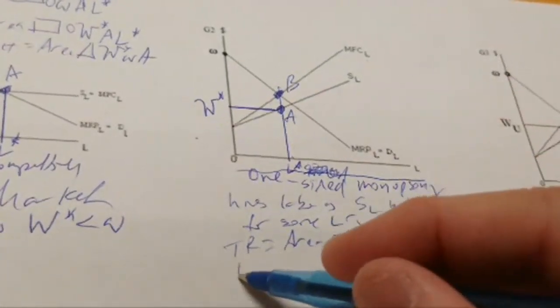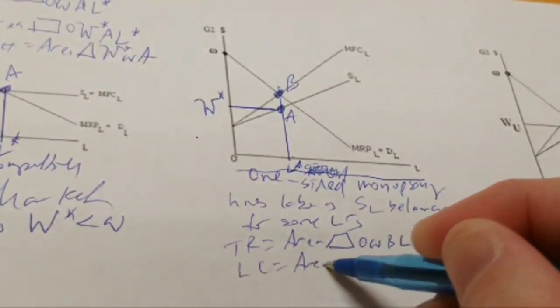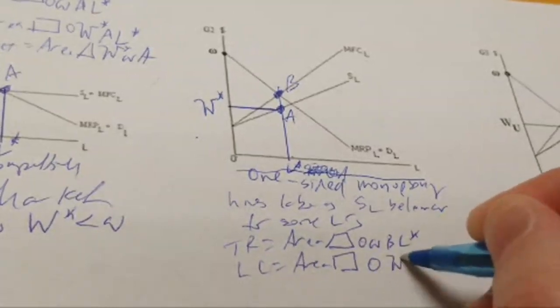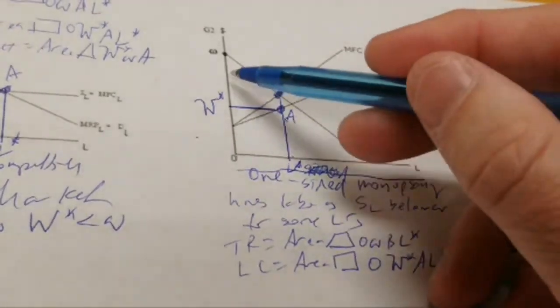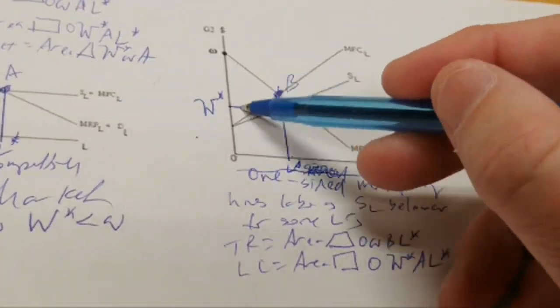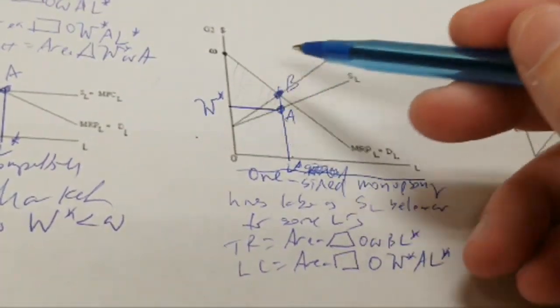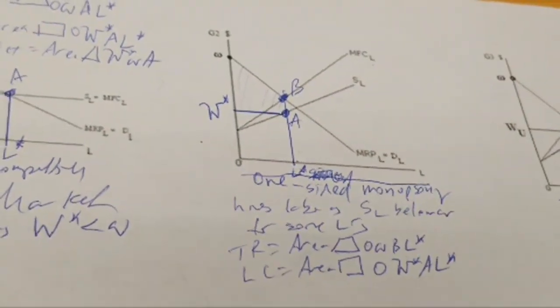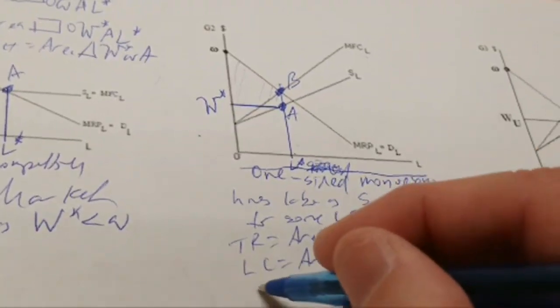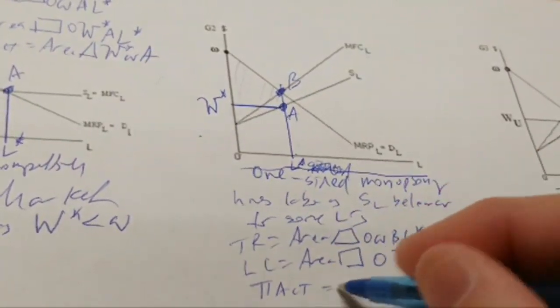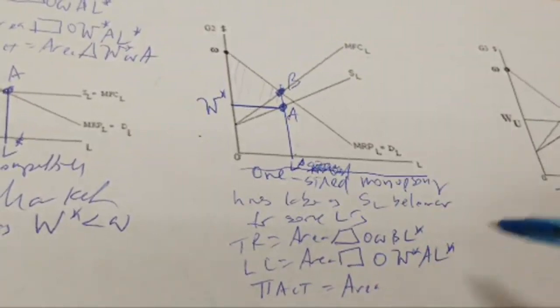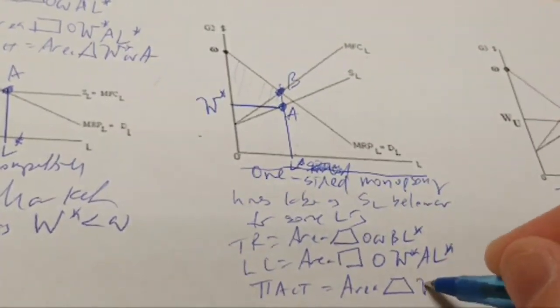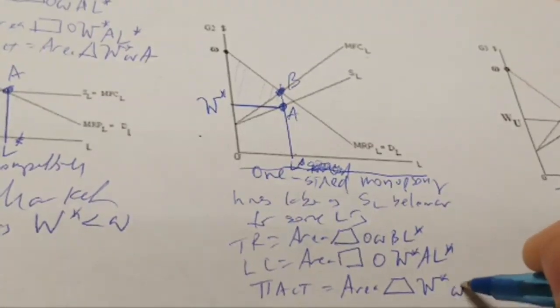Now, W star times L star is labor cost. So that's the area of a rectangle again. Area of rectangle zero W star A L star. But the difference between them is this trapezoid up here, and I don't want you all shading it in. I'm trying to shade it in a little bit just for the sake of the video here. That is the degree to which the total revenue exceeds the labor cost here. And so, since we're assuming labor is the only explicit cost, the accounting profits are equal to the area of that trapezoid from W star to omega to B to A. This trapezoid at the top here is the accounting profits again.